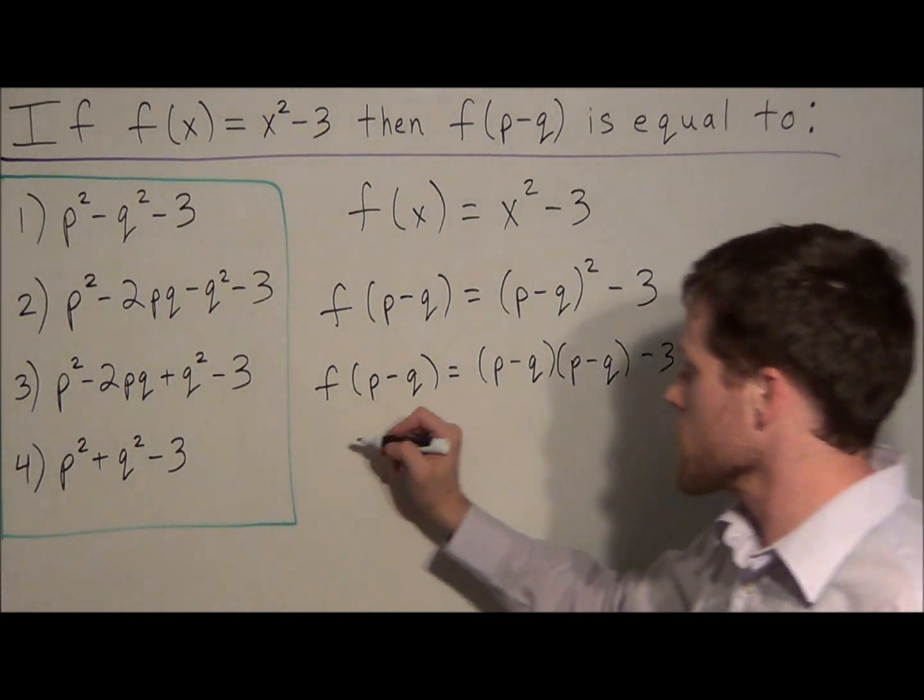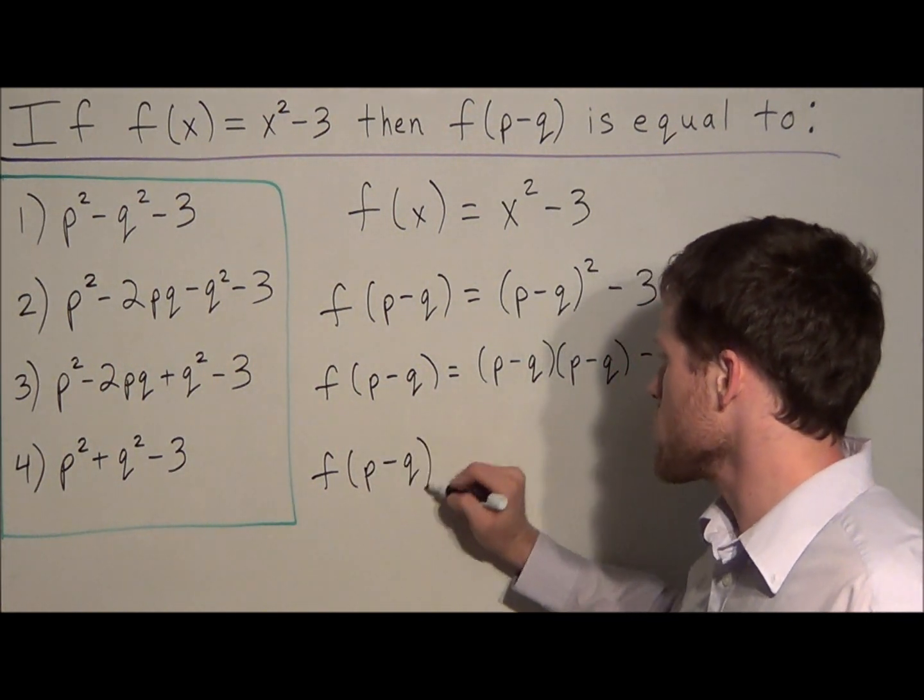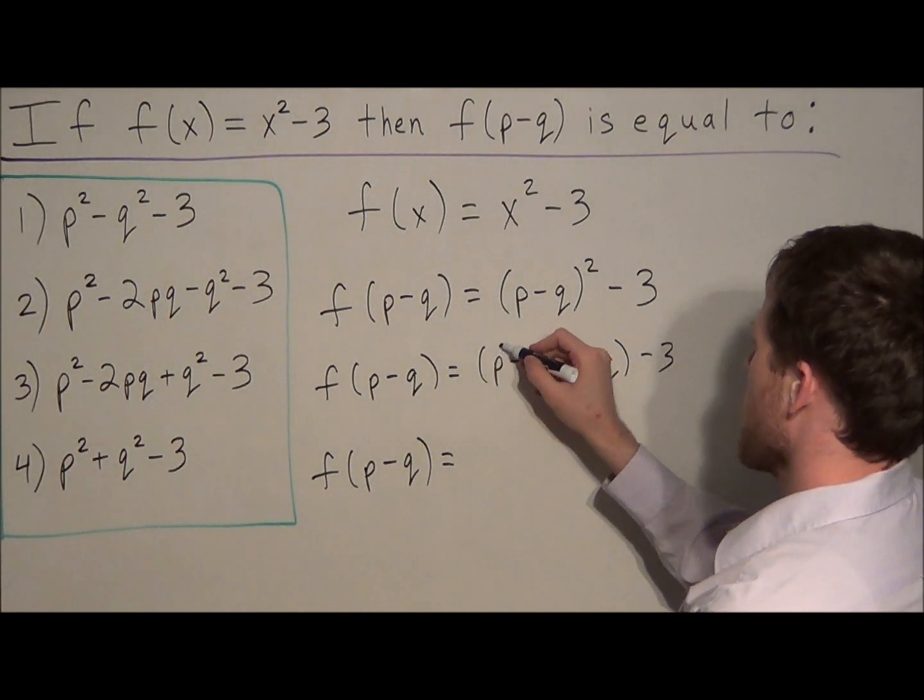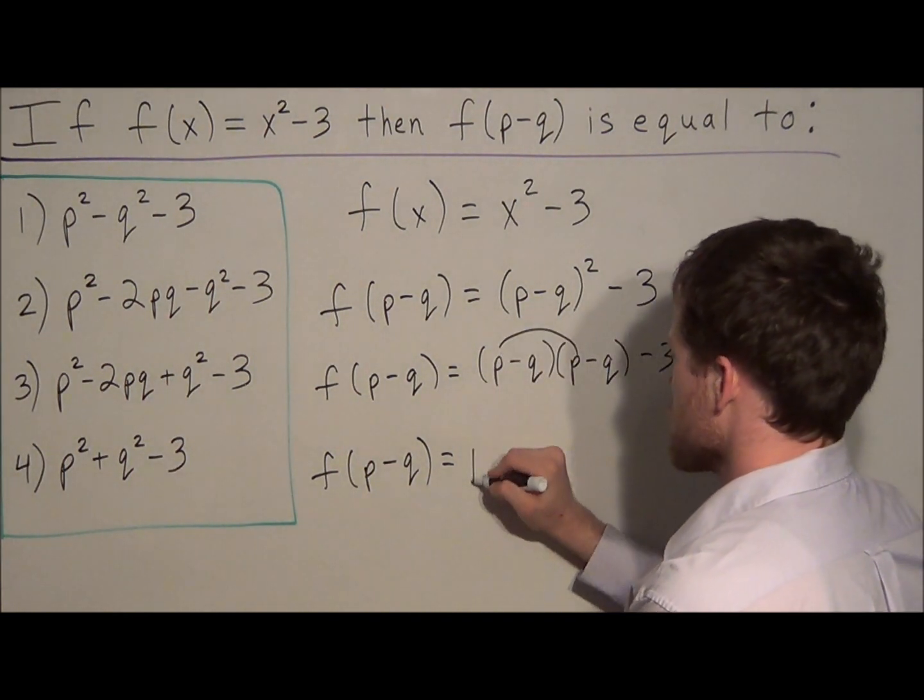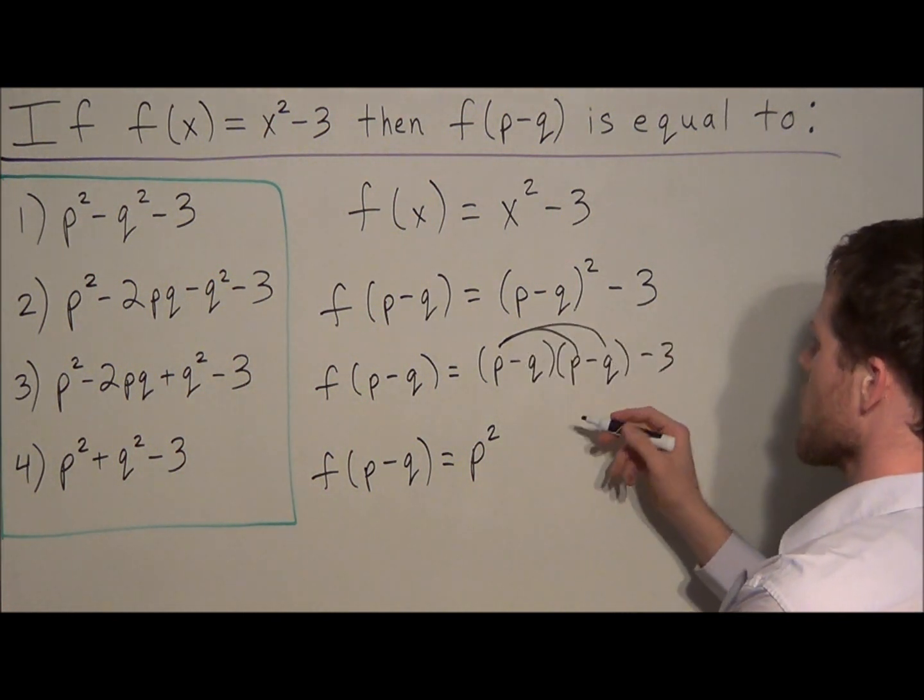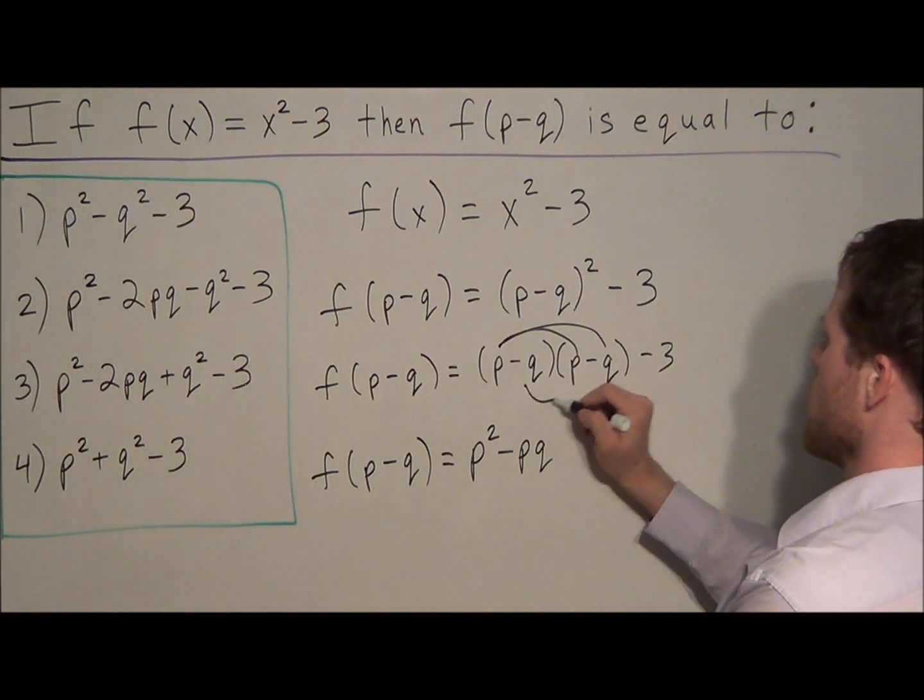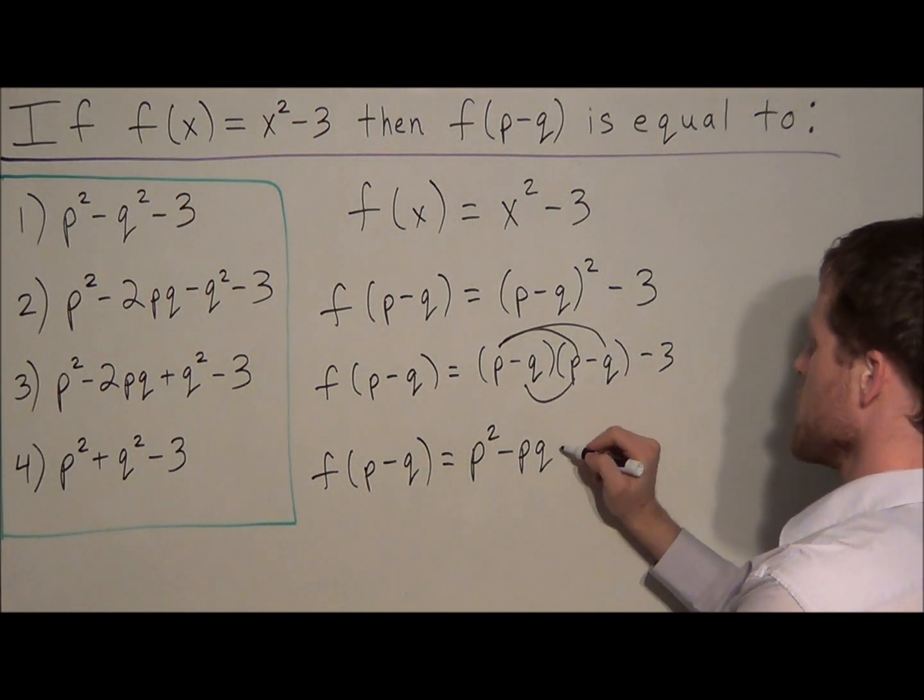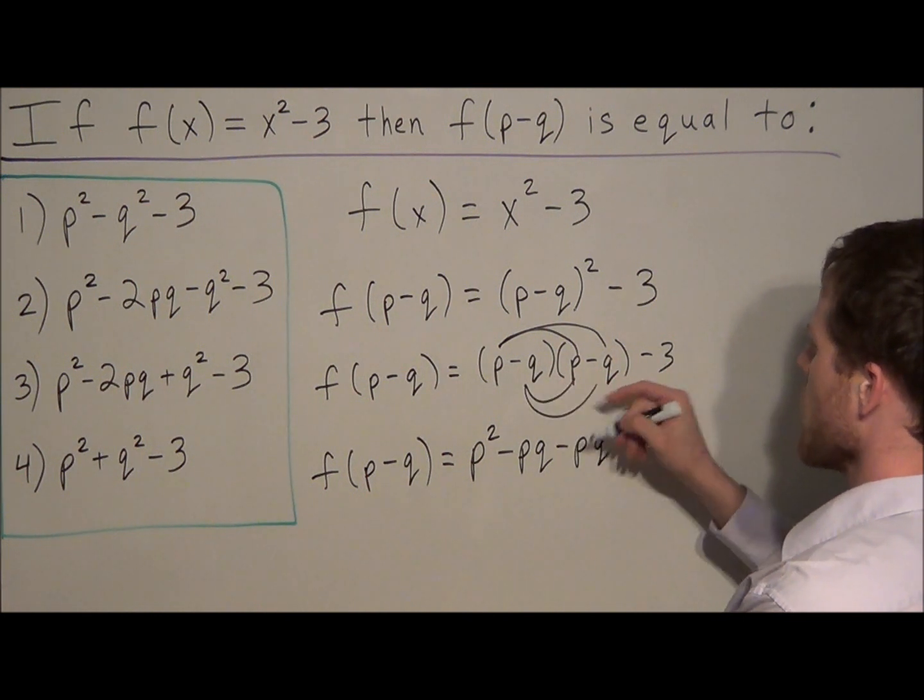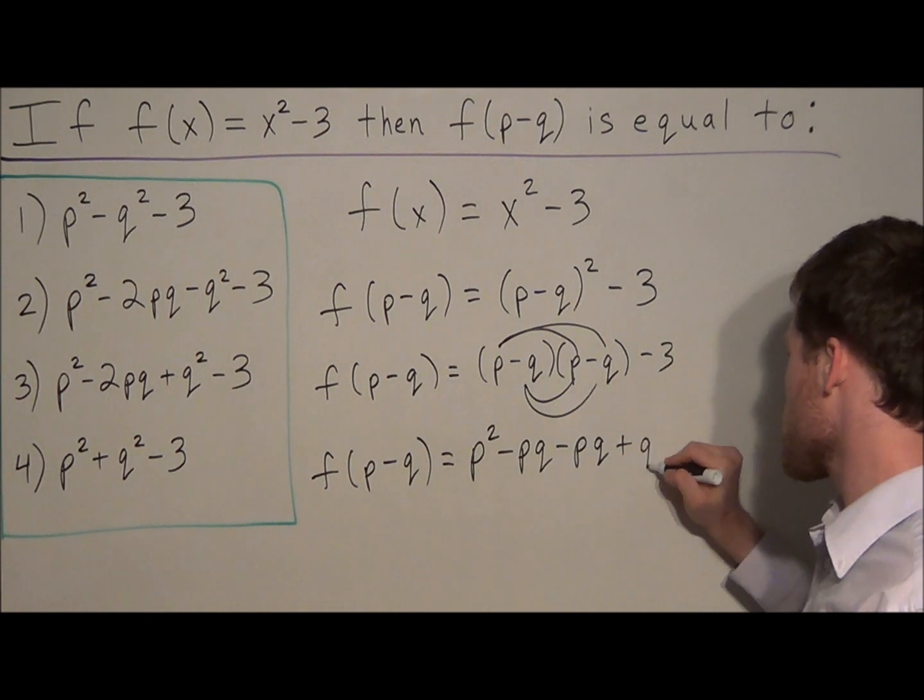So then for the next line, we have f of p minus q equals, and now we just have to multiply this out. First, we're doing p times p, which is p squared. Then we have p times negative q, which is negative pq. Then we have negative q times p, which is another negative pq. And then last, we have negative q times negative q is a positive q squared.